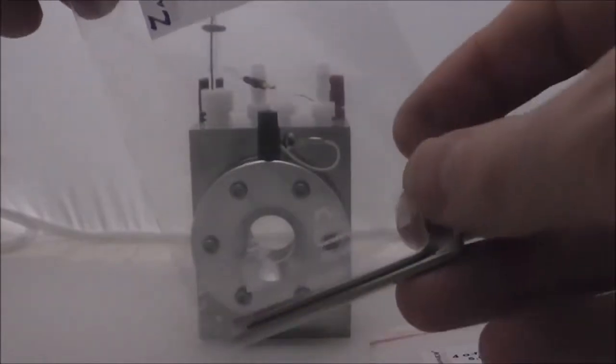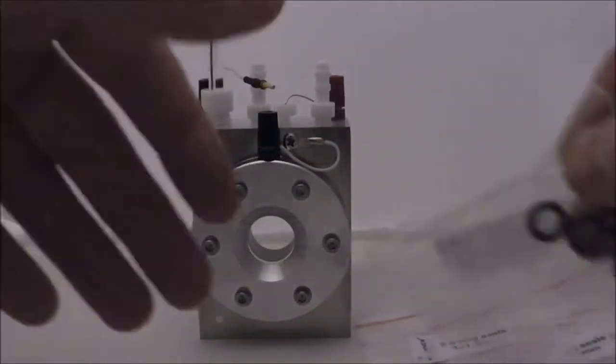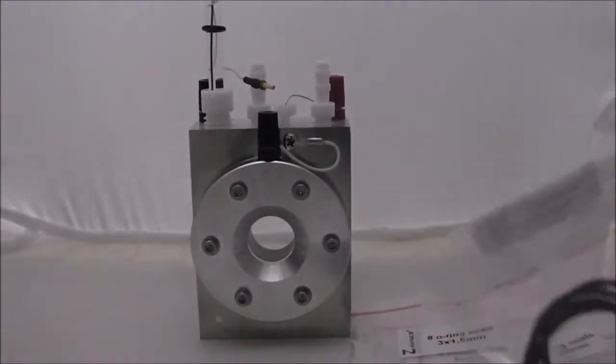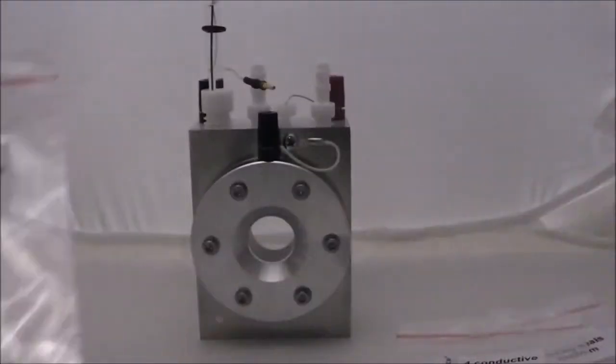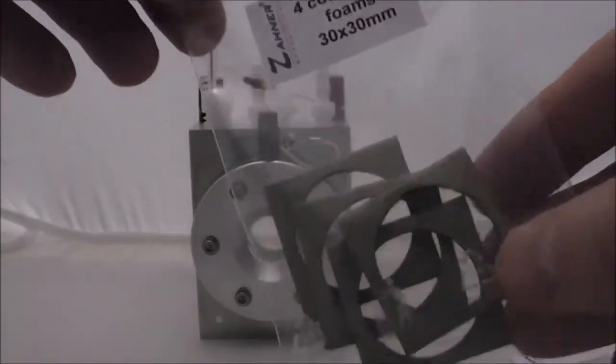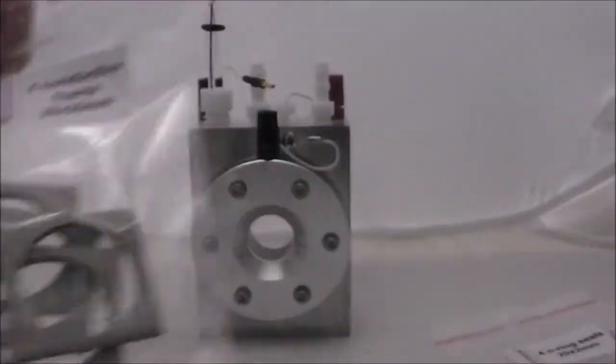You get the hex keys or Allen keys that you require, and all the seals that are necessary. It's not just one of each seal sent. They send a whole series of conductive foams used in the cell as well.